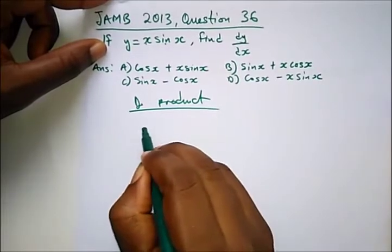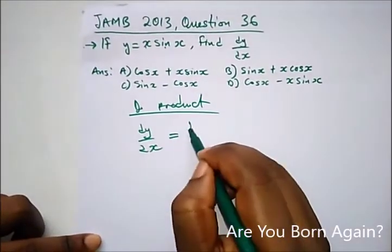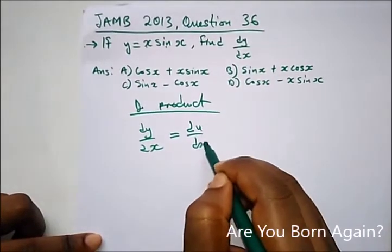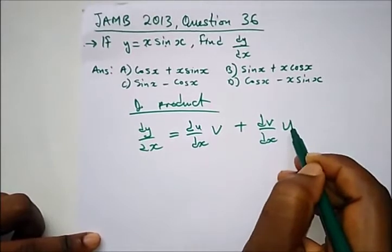The formula is dy/dx = (du/dx)·v + (dv/dx)·u.